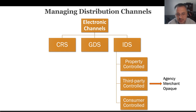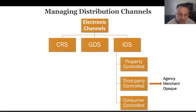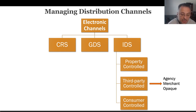The fourth issue is customer ownership — third parties hold all the guest information and may share only limited data with you, and the more data a revenue manager has, the better predictions they can make. Finally, referral sites search the entire web for all available prices and show the lowest, which can trigger commoditization — a major issue.